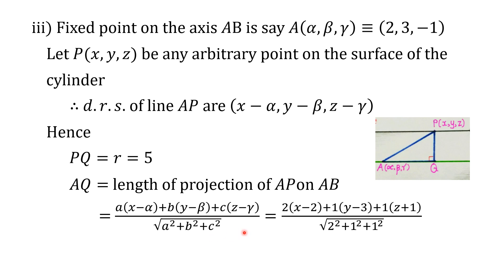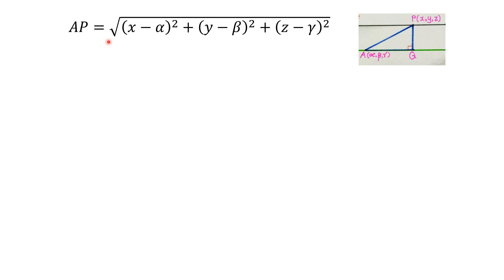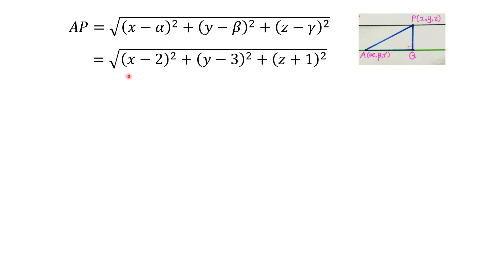Substituting the values of a, b, c and alpha, beta, gamma and simplifying, AQ equals 2x plus y plus z minus 6 divided by root 6. For the distance AP, by the distance formula, AP equals the square root of (x minus 2) squared plus (y minus 3) squared plus (z plus 1) squared.